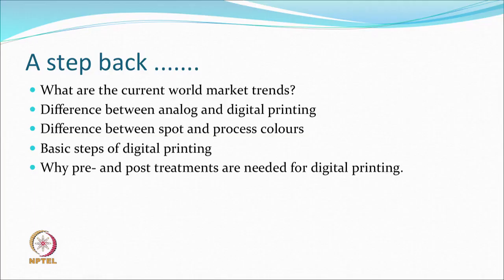Last time we started some discussion on a new method of printing, which is inkjet printing, and we will continue with that for a few more hours. In summary, we talked about the place of digital printing, how to differentiate between digital and analog printing, the difference between spot colors and process colors, and some basic steps used in digital printing. We realize that for various reasons, we may require pre and post treatments in this digital printing method, because the chemistry of the fiber and the chemistry of the dyes have to be matched.